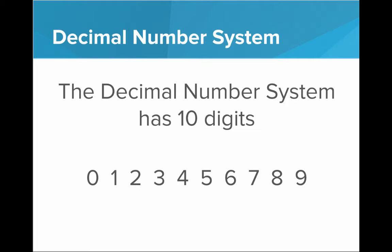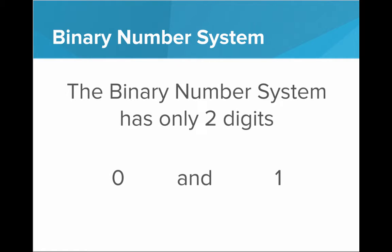But this is not the only number system. Turns out, we can also represent numbers using only two digits. That's the binary number system. The binary number system has a base of 2, only two digits, 0 and 1. This is how computers represent numbers at the very base level, using only 0s and 1s.